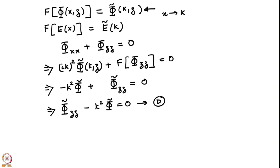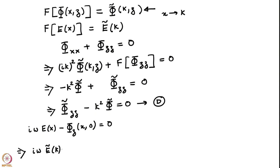Equation B was: iω·E(x) minus φ_z(x,0) = 0. If I take the Fourier transform with respect to x, this becomes iω·Ẽ(k) minus the z-derivative of the Fourier transform of φ, that is, Φ̃_z evaluated at z=0 equals 0. This is equation E.